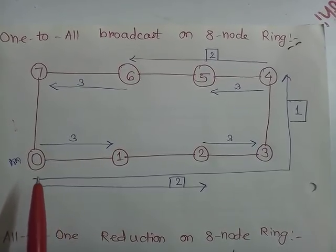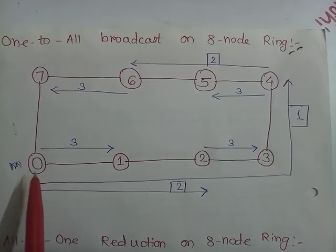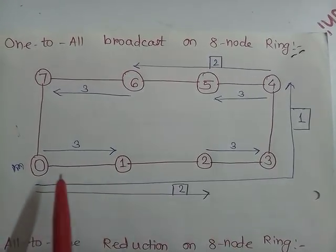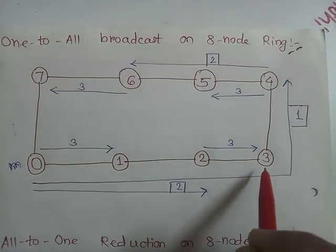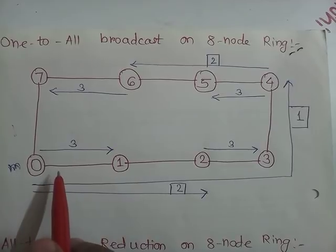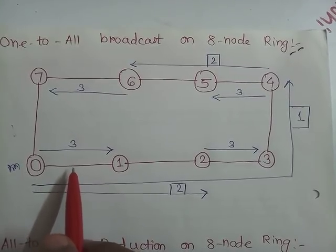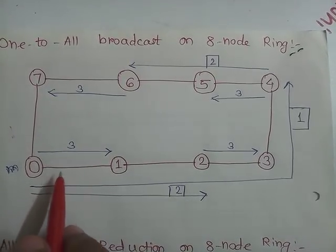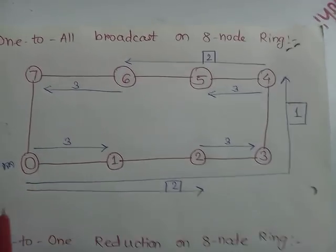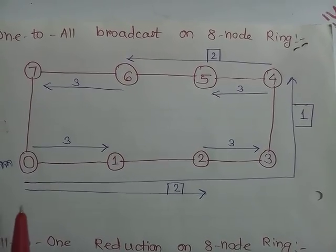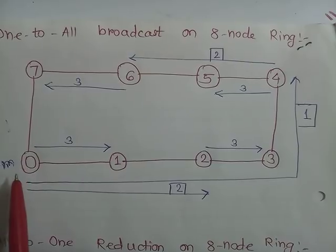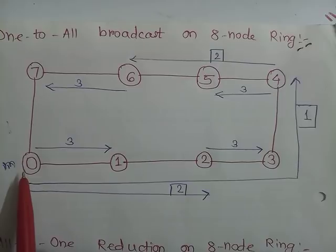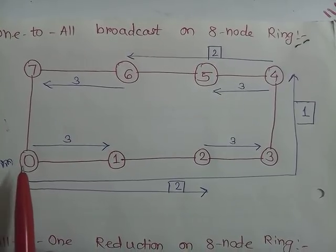If suppose node 0 transfers the message to node 1, then node 1 transfers to node 2, and again node 0 transfers message to node 3, there is multiple use of same channel and it will make these channels busy. So we have to make optimum use of the channels. The algorithm has been developed where in the first step node 0 passes a message to another node, and then both of them, including node 0 and the other node, will transfer the message.